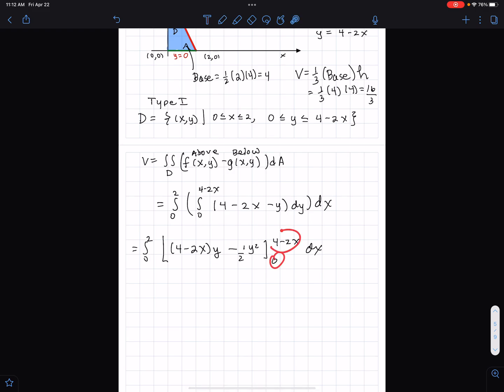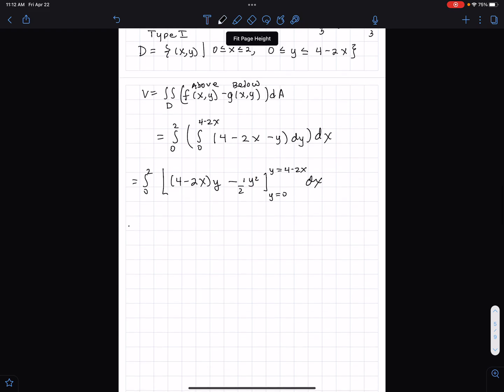And now I plug in for y those bounds of integration. You know what you could do if it sort of makes it a little messy? But you could write y equals 0, y equals 4 minus 2x, just to remind yourself that these go into y. So I still have 0 to 2. Big brackets. 4 minus 2x. And I plug in for y, 4 minus 2x. And then I subtract. So I put y equals 4 minus 2x. And then I subtract 0. Then I come to one half. And I put 4 minus 2x to y squared. So I get 4 minus 2x squared minus 0 squared.